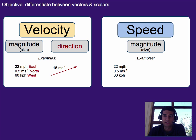Speed, on the other hand, is just the magnitude, which means 22 miles per hour or 0.5 meters per second or 60 kilometers per hour, but notice here we're missing the directions. The direction doesn't matter.